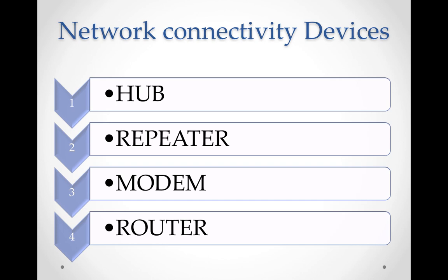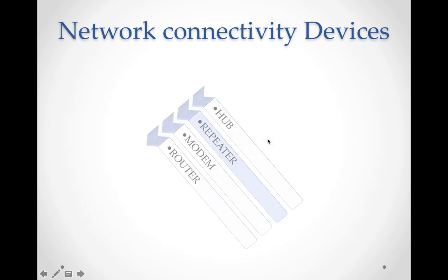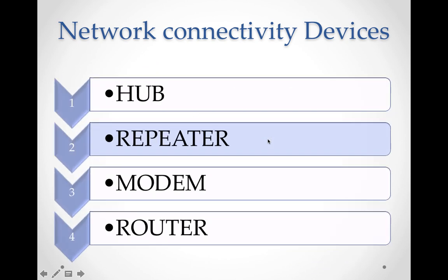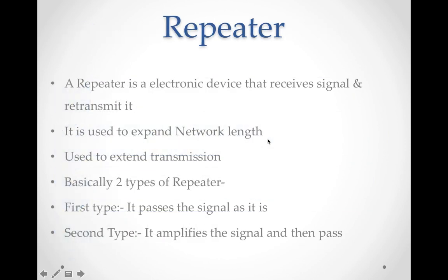We can connect small networks to turn them into a bigger network. We have hub, repeater, modem, and router. Hub we already studied in the last session. Next is the repeater. A repeater is an electronic device that receives a signal and retransmits it.